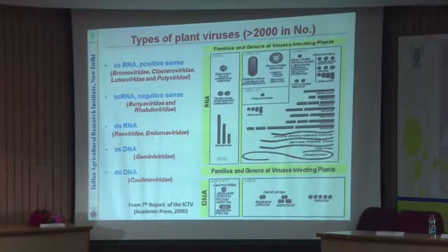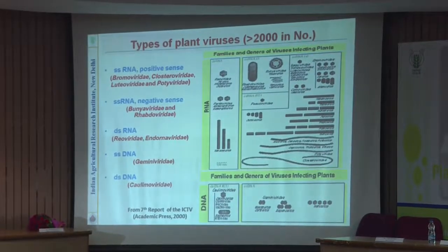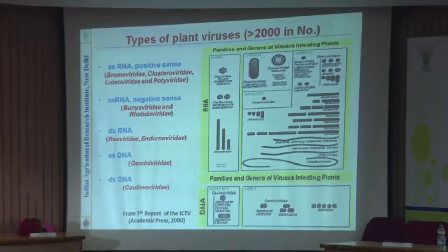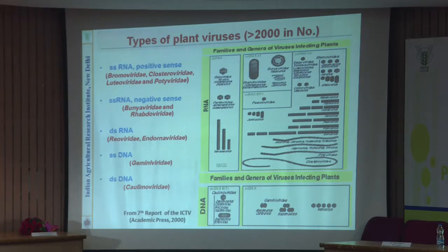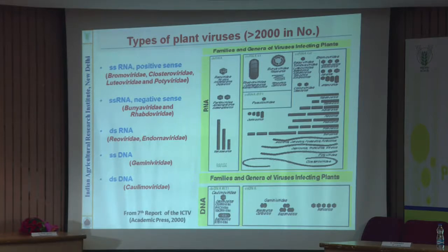After the discovery of tobacco mosaic virus, we now know more than 2000 plant viruses. They have been categorized into single-stranded RNA positive sense, single-stranded RNA negative sense, double-stranded RNA, single-stranded DNA, and double-stranded DNA viruses. In terms of shape, they can be hexagonal or spherical, bacilliform, monopartite to multipartite, rigid rod, or flexuous. They cause different kinds of symptoms, or may not cause symptoms at all — so detecting and characterizing them is a big challenge.